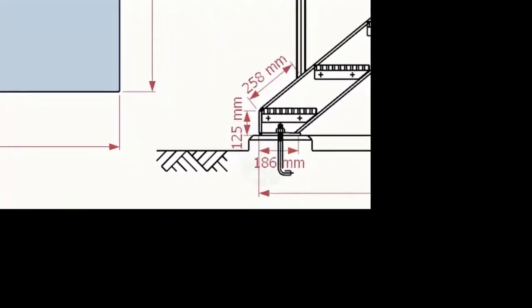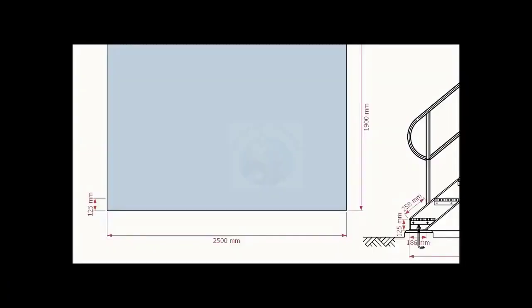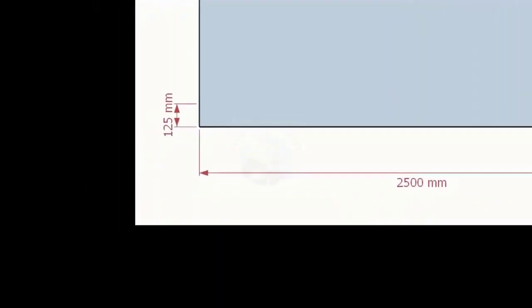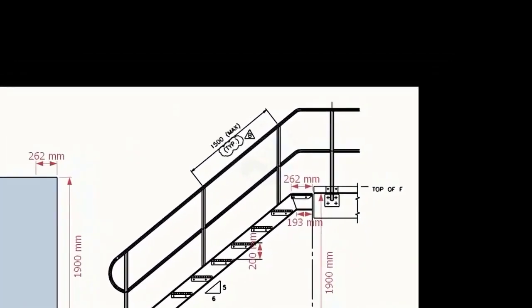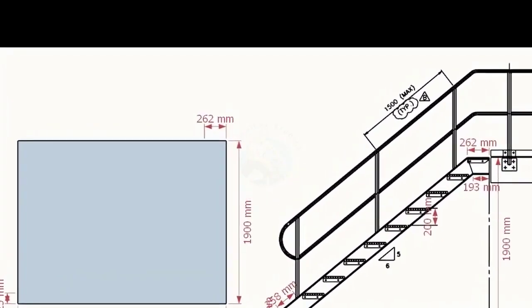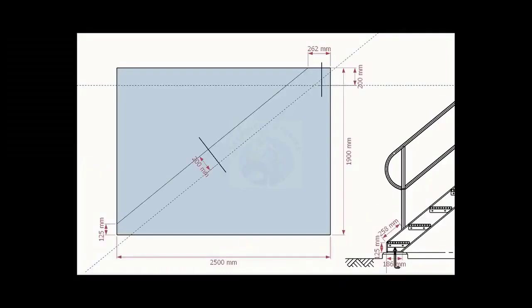Look at the bottom of the stair channel. The height of the notch is 125mm. Let us mark this height on the layout. Go to the top end of the stair and knock down the dimension 262mm. Mark this measurement on the top of the layout as shown. Draw a line connecting these newly marked points. Draw parallel lines as shown — the width is equal to the width of the channel.